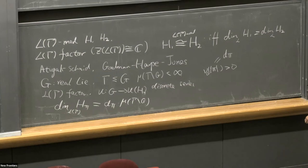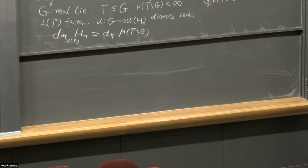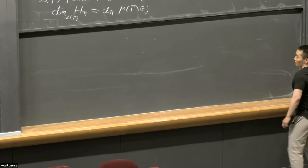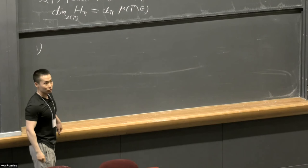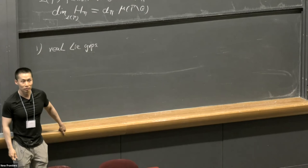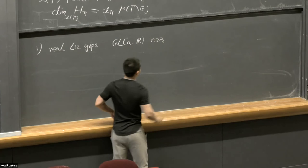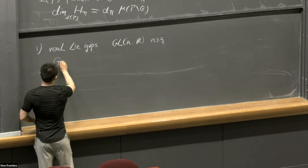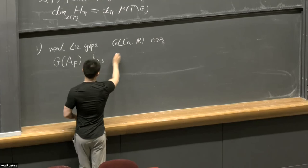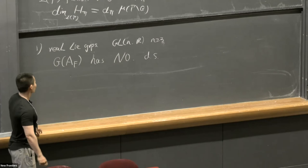Now, let me tell you what's the gap between this theorem and my result. First, if we just restrict to real Lie groups, most real Lie groups do not have discrete series. For example, if you look at GLN of the real field with n greater than 3, such groups have no discrete series. But moreover, the adelic group over any number field has no discrete series. So we cannot apply this theorem anymore. That's the first gap.